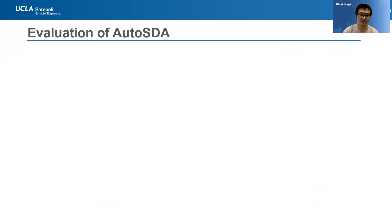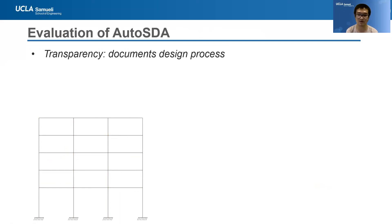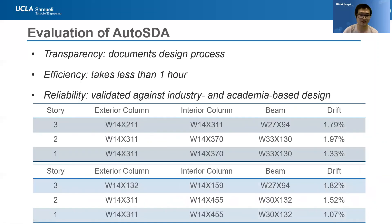The AutoSDA platform has the following advantages. First of all, it is capable of documenting the entire design process — the user can keep track of how each member size is changed during each iteration. The plot at the bottom left corner shows the design process for a five-story building. Second, it is efficient; the table at the bottom right corner indicates that the design completion time for AutoSDA is typically less than one hour. Third, it is reliable; the designs generated from AutoSDA and the practice engineers are comparable.